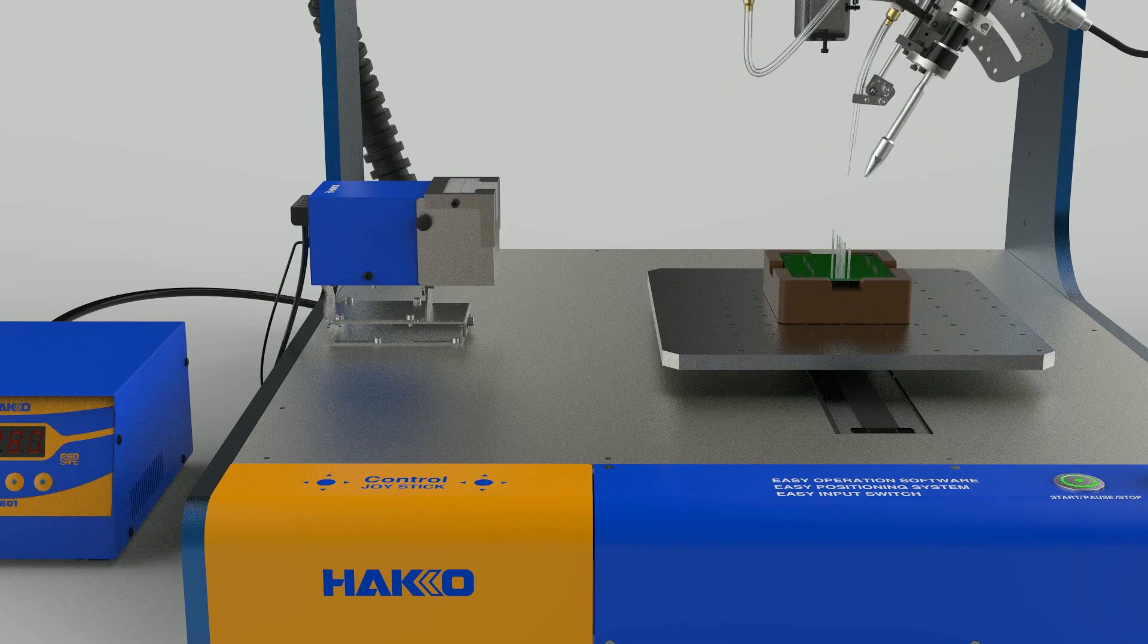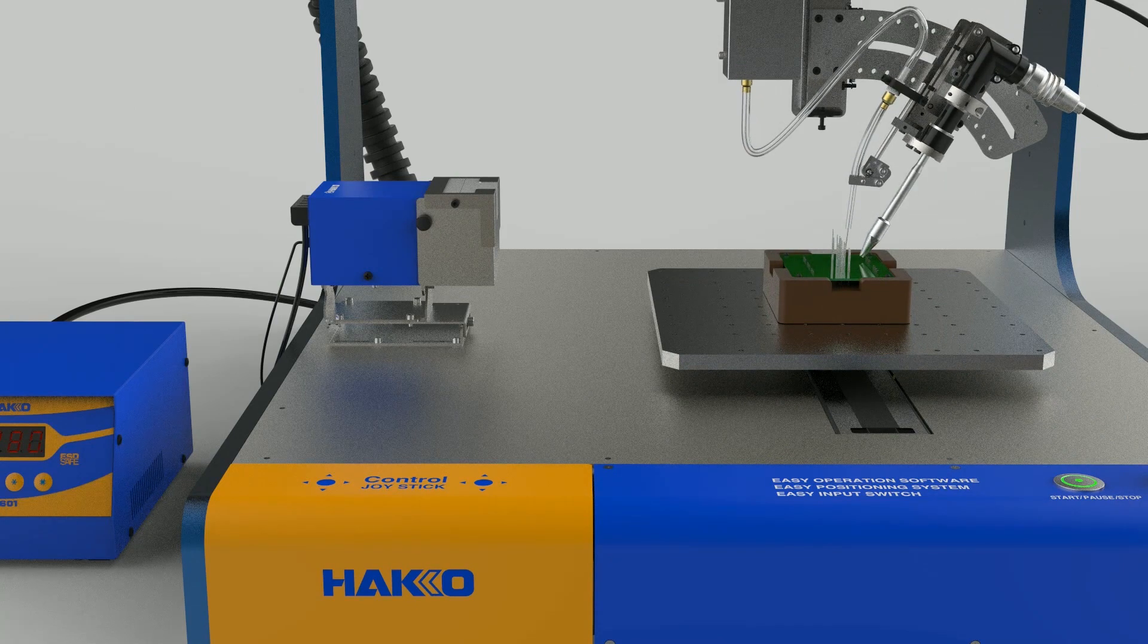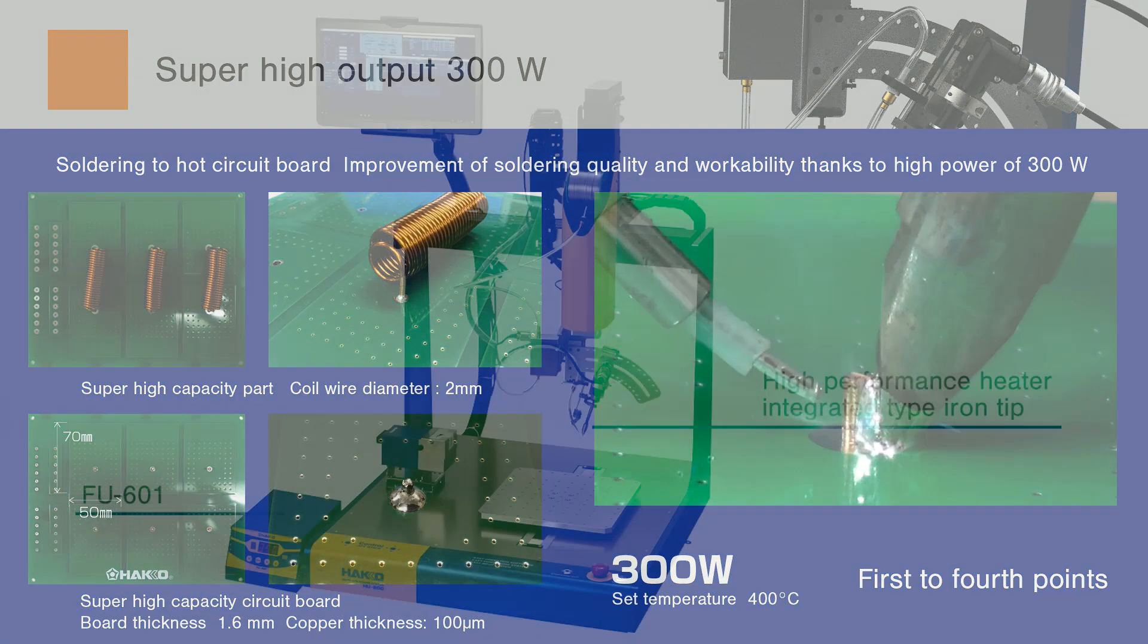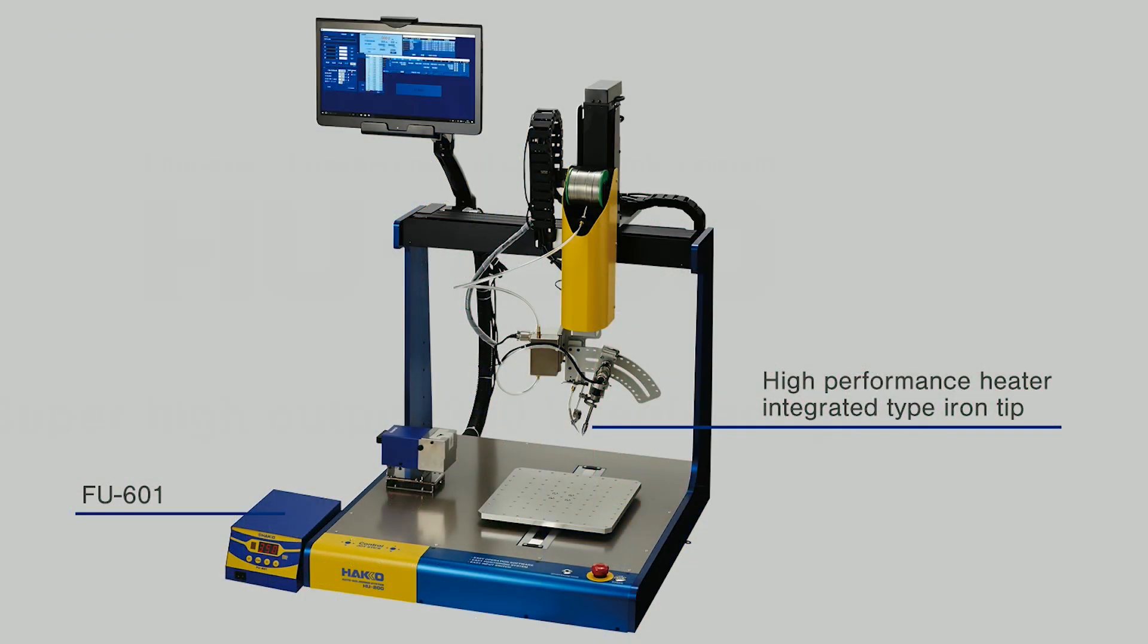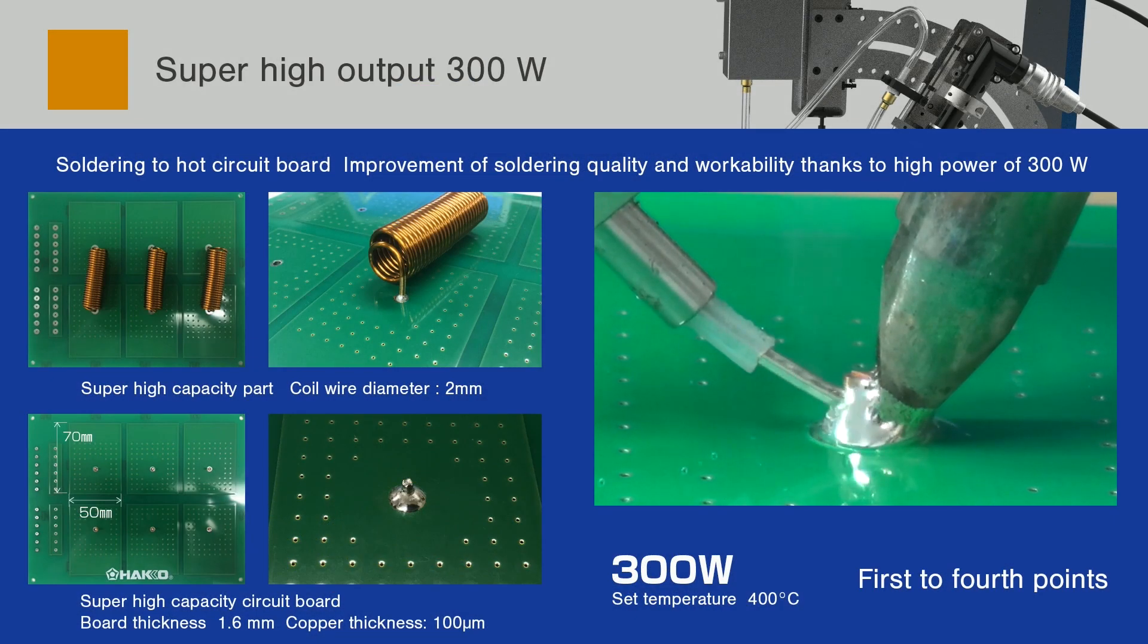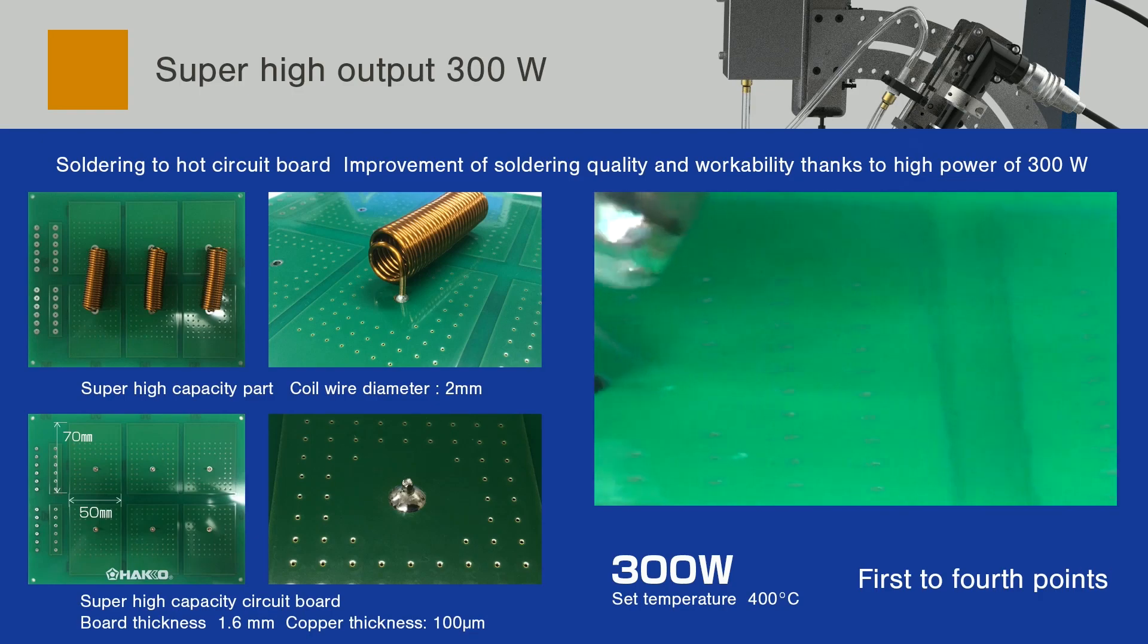The performance of the soldering iron dominantly determines the quality and operability of soldering in the automatic soldering robot. The HU200 is equipped with the FU601 that has 300 watts of high output as the soldering controller to realize high quality and high efficiency soldering.